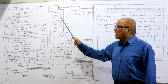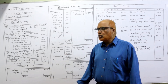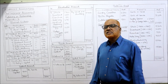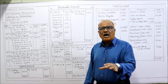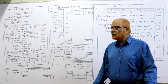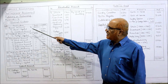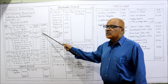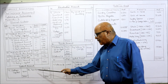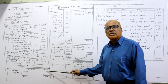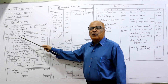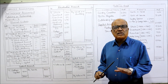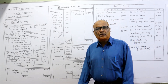Now preparing the goodwill account. In the first entry, goodwill account was credited by ₹8,000 (by bank). In the second entry, goodwill account was debited at ₹8,000 to Pratap's capital. So both sides of goodwill account show ₹8,000 and the account gets closed — it will not appear in the balance sheet.